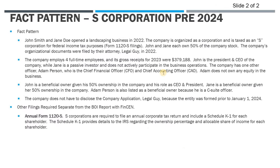In our fact pattern, this is an S corporation set up before January 1, 2024. John Smith and Jane Doe opened a landscaping business in 2022, organized as a corporate entity taxable as an S corporation. John and Jane each own 50% of the stock. The company's organizational documents were filed by their attorney in 2022. The company employs four full-time employees and had gross receipts of $379,188 for 2023. John is president and CEO, while Jane is a passive investor. The company has one other officer, Adam Person, who is CFO and CAO.